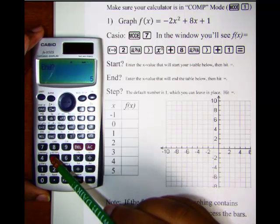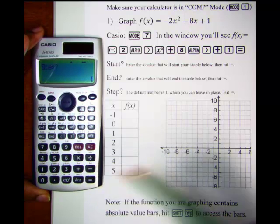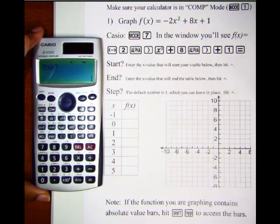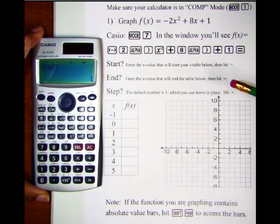If not, you just type in your number and hit equals and then the next step is step. The default number is 1 and that's usually the number we keep it on.